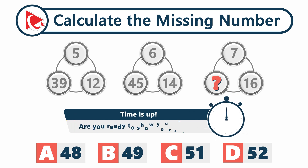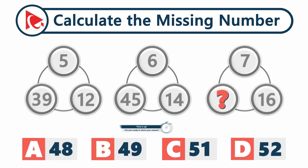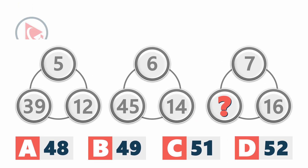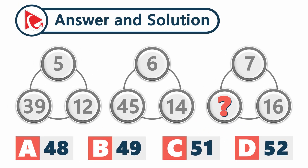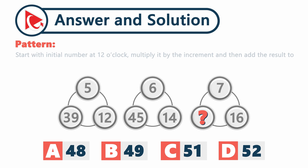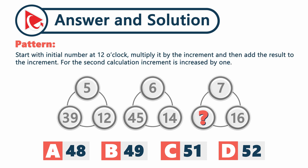Time's up! Are you ready to show your answer? I hope you found your solution. So let's compare our answers. You need to start with the initial number at 12 o'clock, multiply it by the increment, and then add the result to the increment. What makes it a little tricky is that for the second calculation, the increment is also increased by 1.